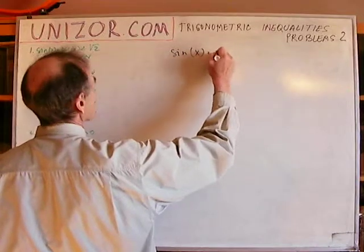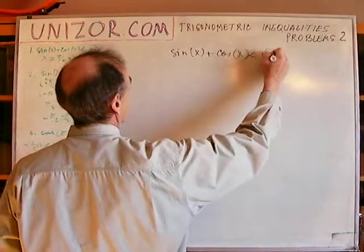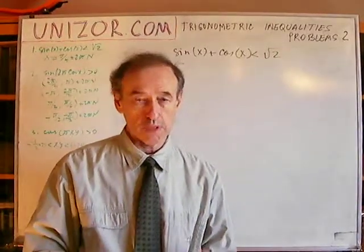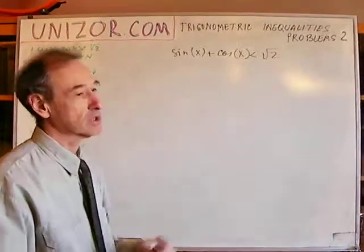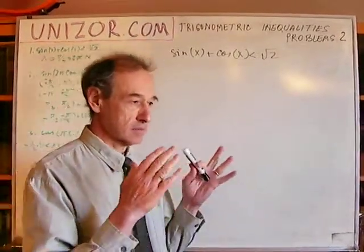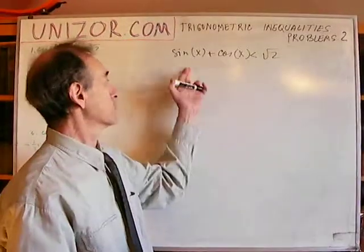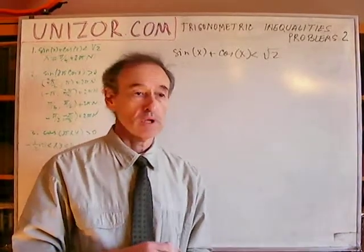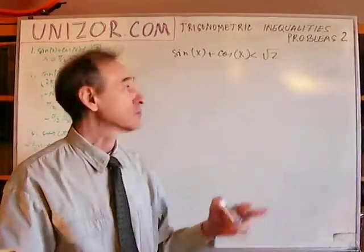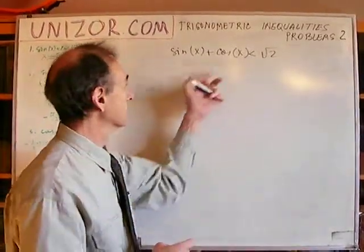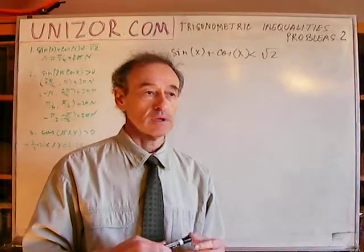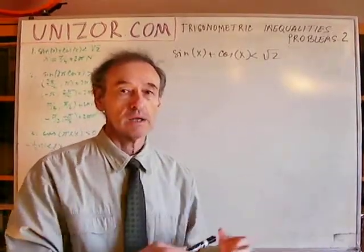Sine of x plus cosine of x less than square root of 2. Obviously, we can do it in many different ways. I think what this particular problem is actually trying to make a point. Before solving anything straight without any thinking, you can just draw a graph of this function — sine of x, cosine of x, add them together, get some curve — and try to resolve the equation when this is equal to square root of 2. Yes, you can do it this way.